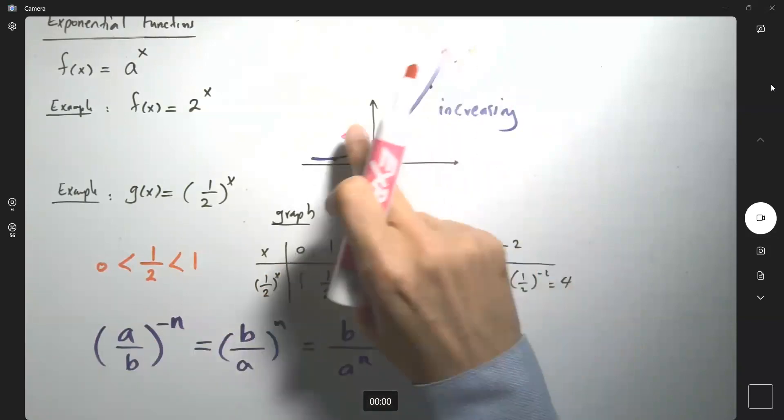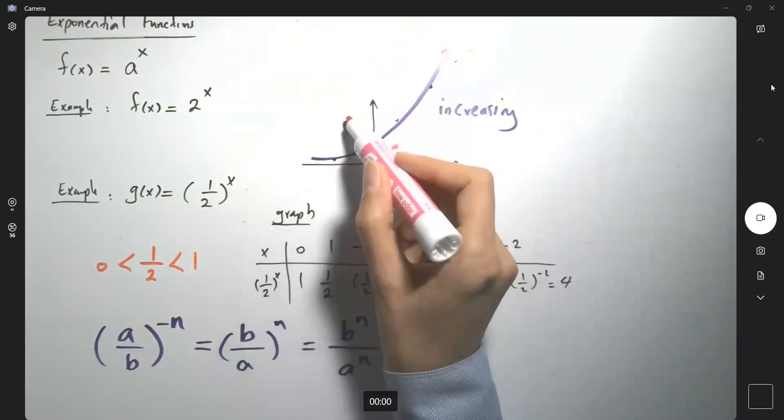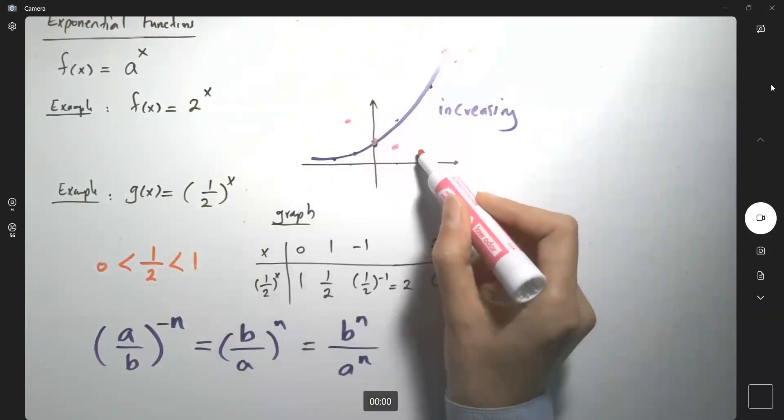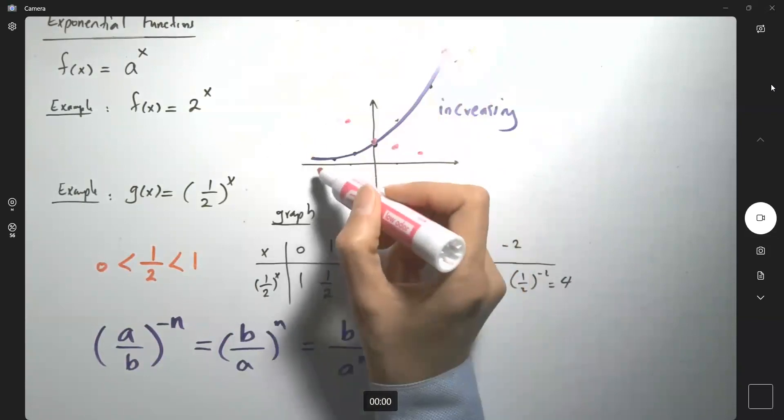So let me just move this 2 a little bit up so it matches. 2 and one-fourth. Negative 2 and 4.